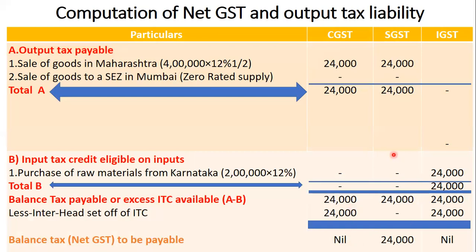So Sanjana has to pay 24,000 under SGST and she is not going to get any relief for IGST additionally. This is how we calculate the net GST as well as the output tax payable under the GST regime. If you have any clarifications, please write your comments in the comment box and I will respond to your queries. Thank you.